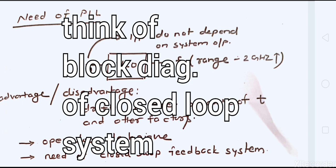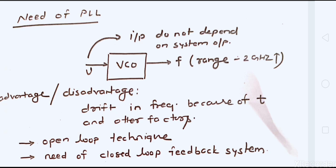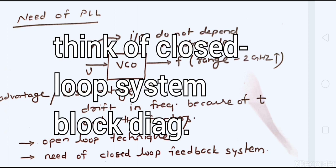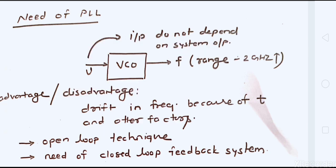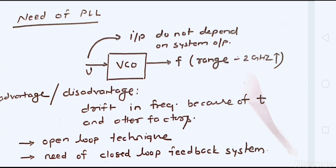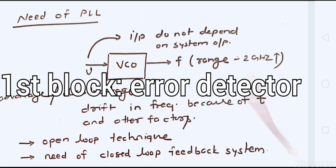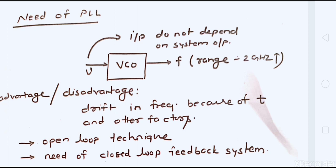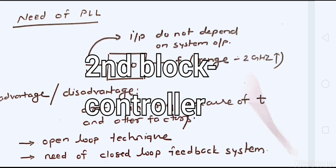Before going into the block diagram of the PLL, I want you to think about what a control system consists of — what different blocks a closed-loop control system has. Can you think of what the first block is in a closed-loop control system? A common block between open-loop and closed-loop systems is the plant itself. In a closed-loop system you have a plant, and you also need a controller.